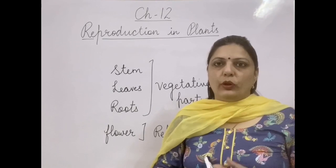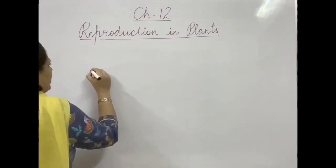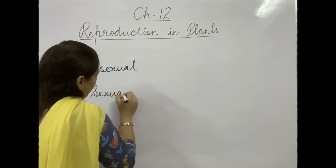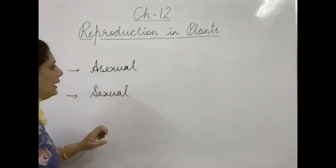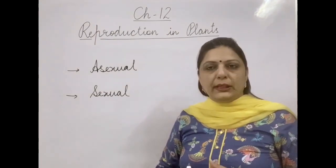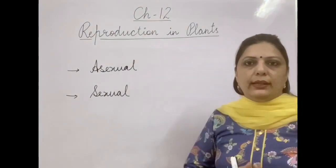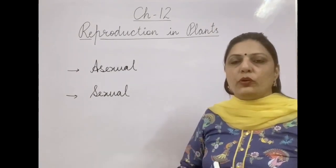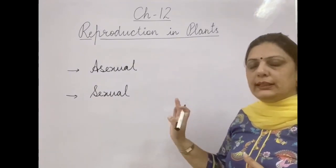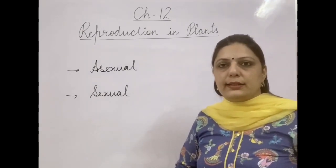To understand how all plants reproduce, there are basically two modes of reproduction. One is called asexual mode of reproduction, and the second is called sexual mode of reproduction. Asexual reproduction is the mode in which the reproductive part plays no role — there is no role of flower or seed. Sexual reproduction is the mode in which the flower and seed play a role in bringing the new generation into existence.